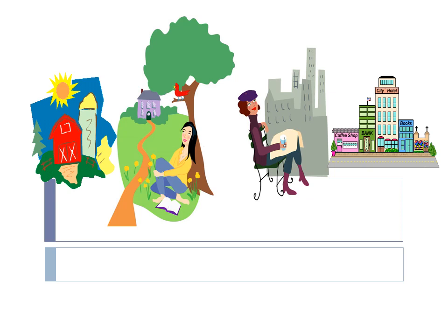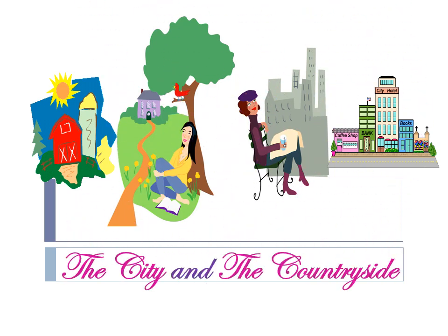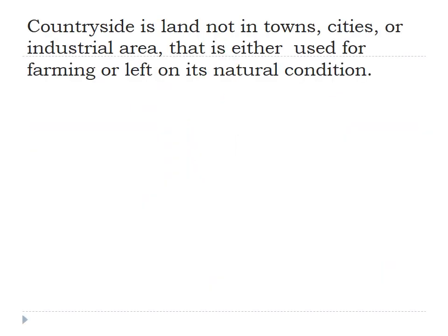Hi students, how are you? I hope you are always healthy. Today we are going to discuss about the city and the countryside. Let's discuss about the countryside first. A countryside is a land not in towns, cities, or industrial areas that is either used for farming or left in its natural condition. Look at the picture of the countryside.